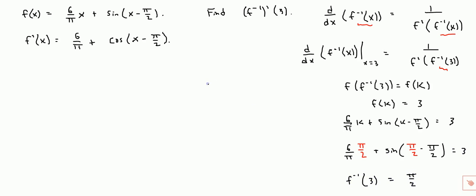Alright, so we're trying to find the derivative of f inverse of x evaluated at x equals 3. We know that it's equal to this, 1 over f prime of f inverse of 3. Alright, we just found f inverse of 3. So it's 1 over f prime of pi over 2.